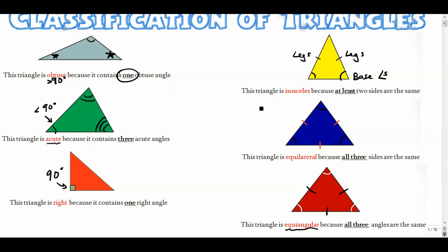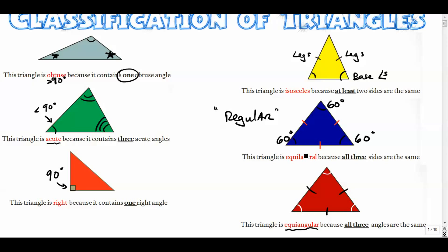When all sides and angles are the same, this triangle is also called a regular triangle. In everyday English, regular doesn't mean much — if something's regular, it's not very special. But in geometry, regular triangles are very special. Every angle in a regular triangle, no matter how big or small the triangle is, is always 60 degrees. That's because all the angles add to 180 in every triangle, and if they're all the same, you do 180 divided by 3.